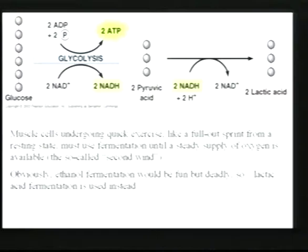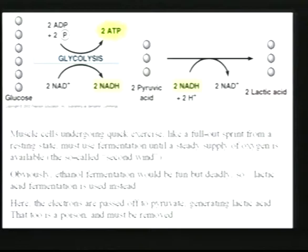Lactic acid is also a poison — not quite as poisonous as ethanol, but you've got to get rid of it. That's one reason why you get cramps doing anaerobic exercise: your muscles aren't getting rid of the lactate as fast as it's being generated. So: lactic acid fermentation and ethanol fermentation are two ways of dealing with a lack of oxygen. Some bacterial cells cannot live if oxygen is present — oxygen poisons them — so they do fermentation exclusively and it's enough for their relatively limited needs.